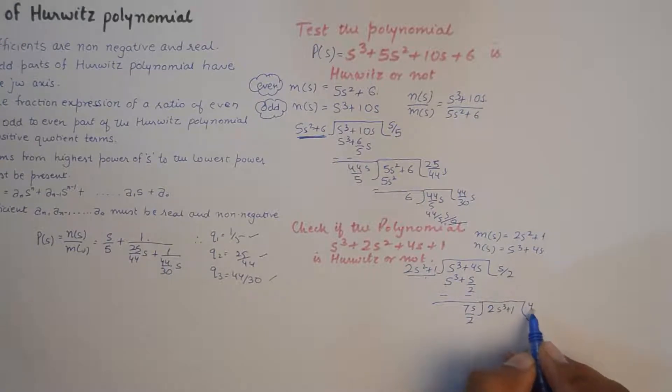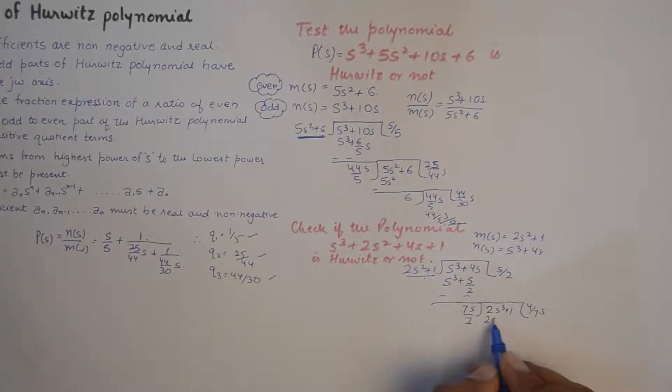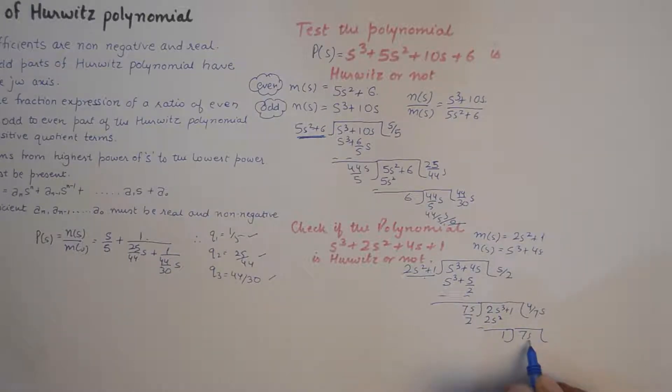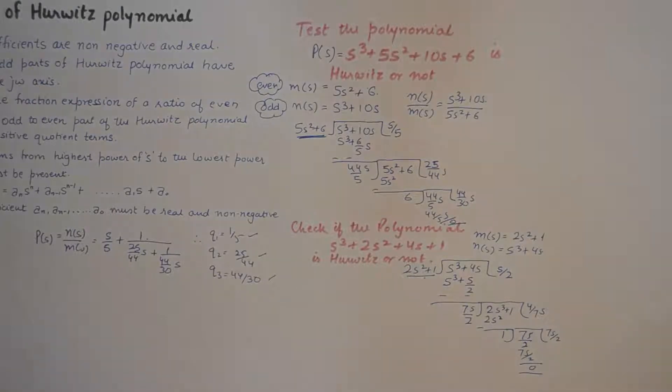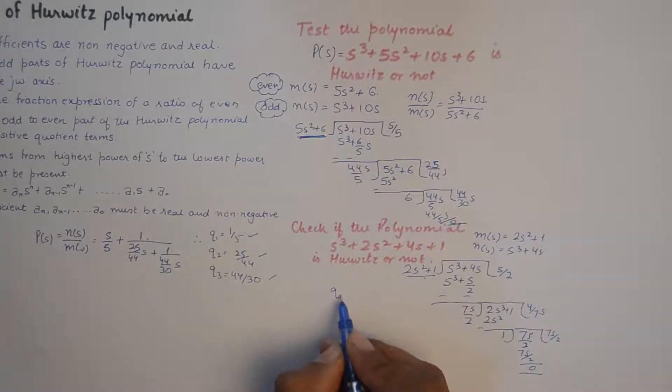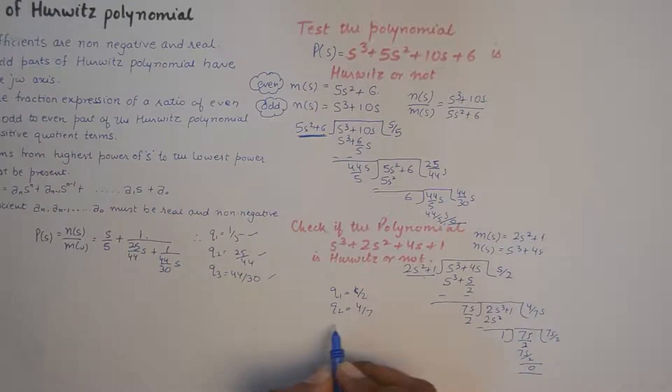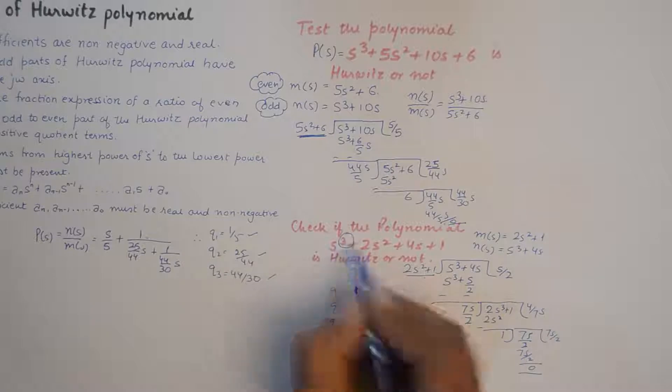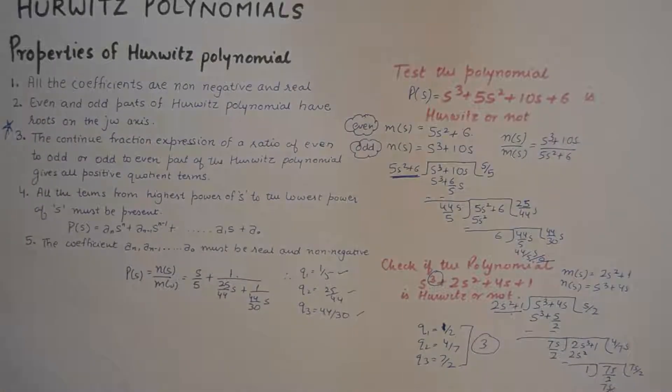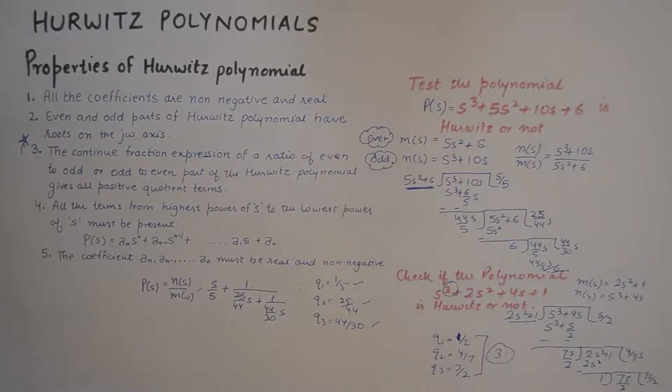And now I need to bring this thing here. So I need to multiply this with 4 by 7s to get 2s. The idea is to eliminate this, and I get a 1, and I bring this here until I'm left with a remainder of 0. All right, over here also, quotient one is one by two, coefficient of quotient two is four by seven, coefficient of quotient three is seven by two. And we've got three coefficients, which is equivalent to the highest degree of polynomial here.